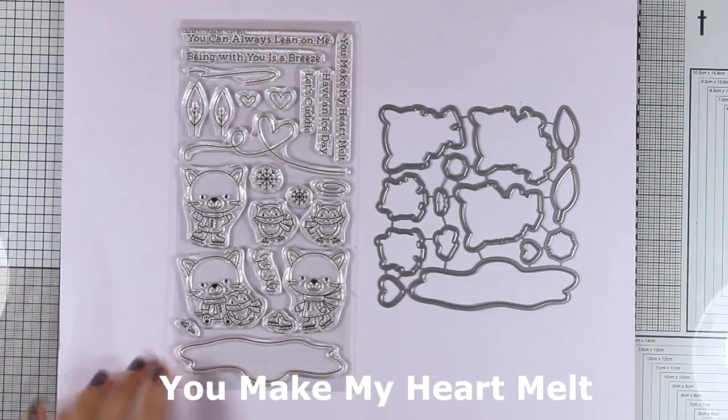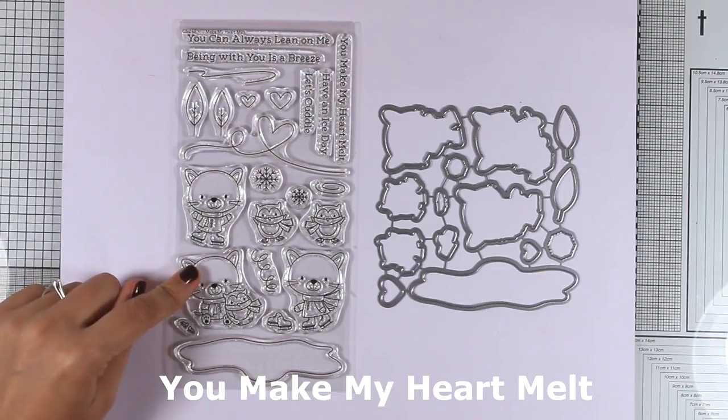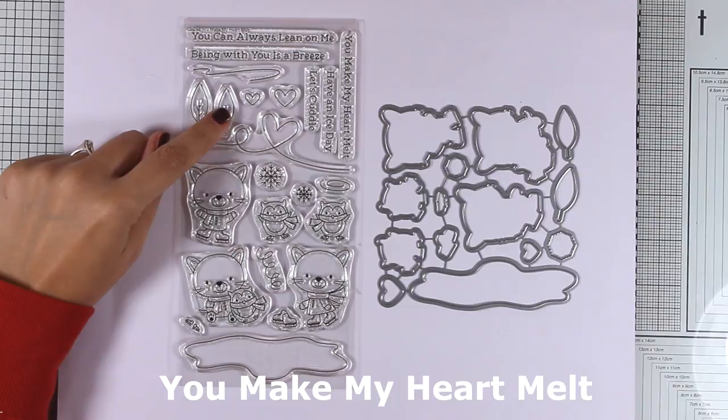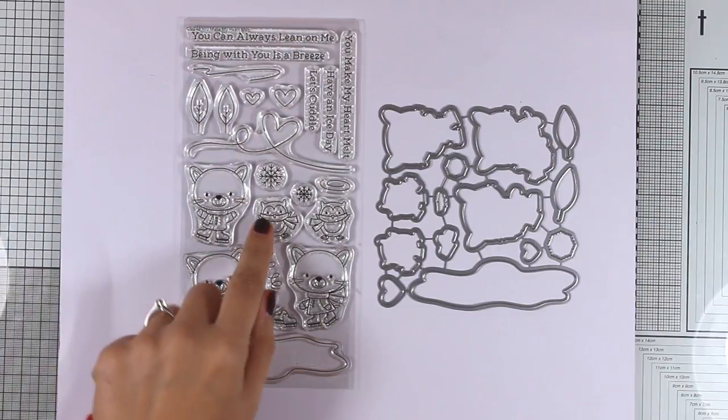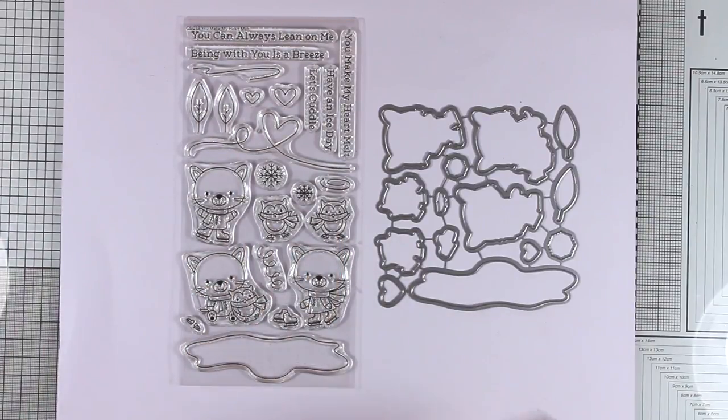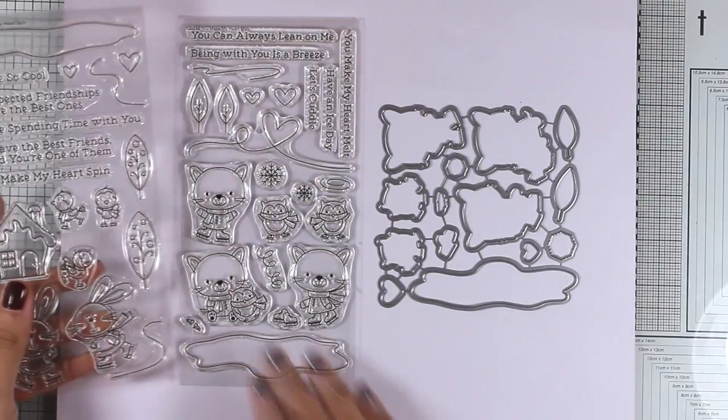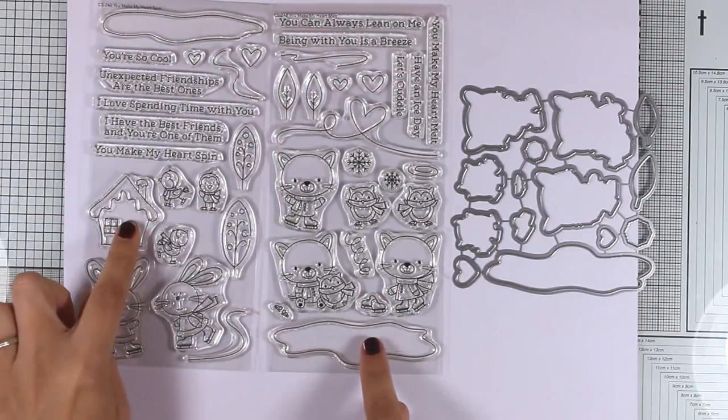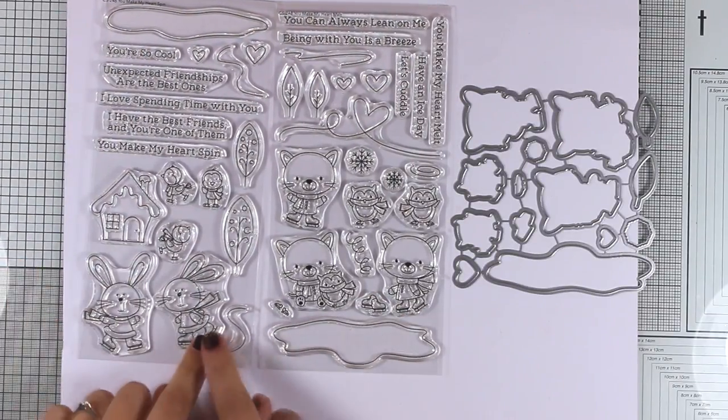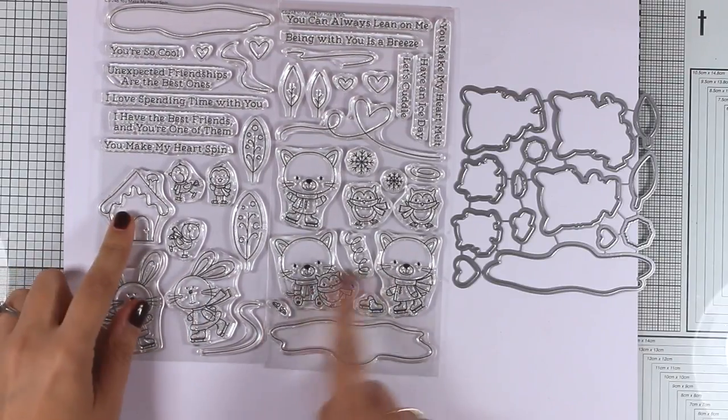There's another stamp set released this month, and this is You Make My Heart Melt. As you can see, you get three adorable cats along with even more props to create your little scenes, and there are matching dies. Between these two stamp sets, the proportions are pretty much the same, so you can mix and match them and create beautiful scenes with adorable critters.